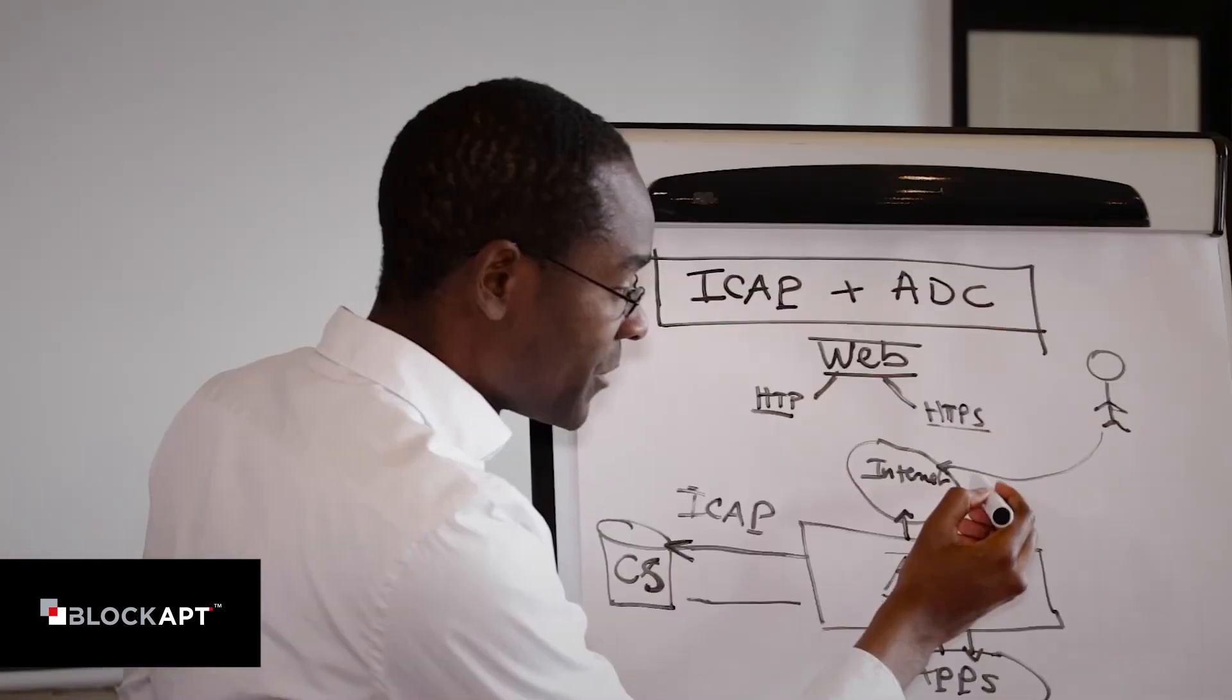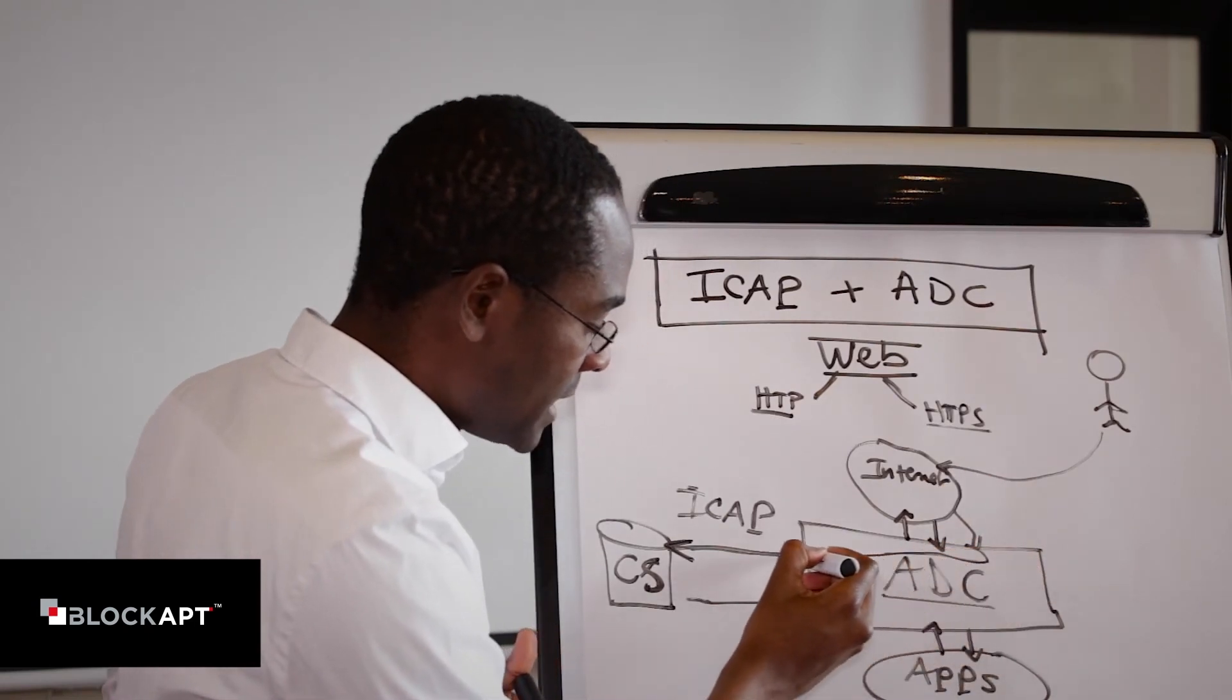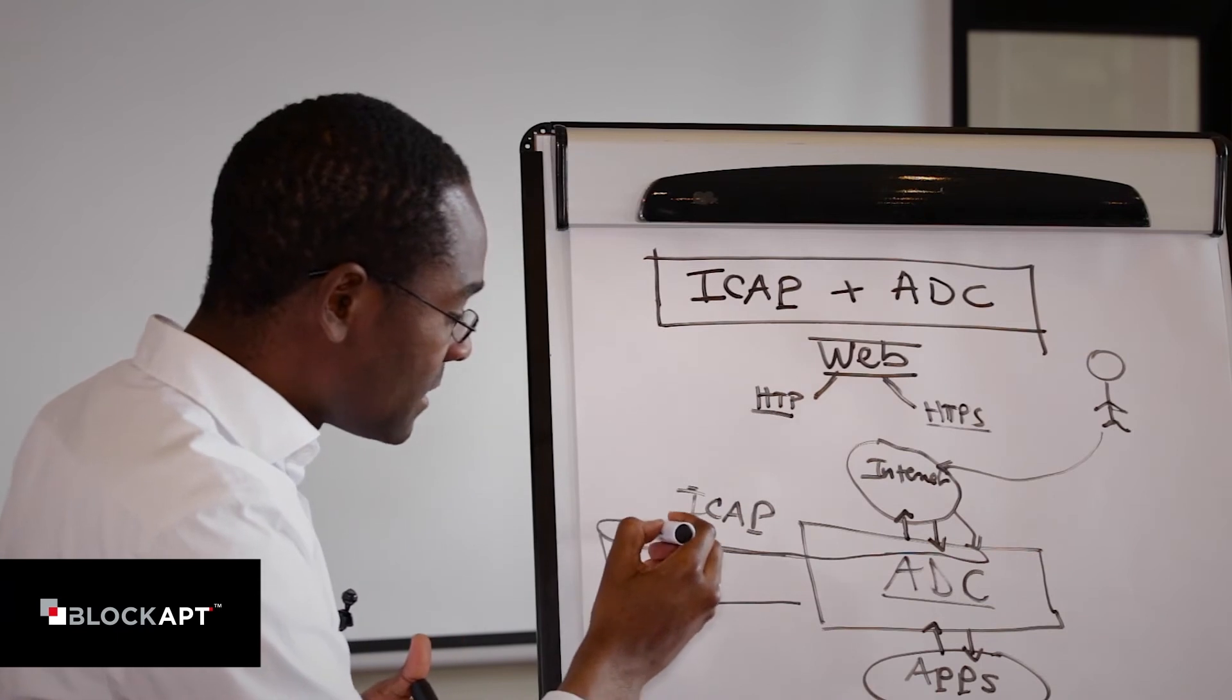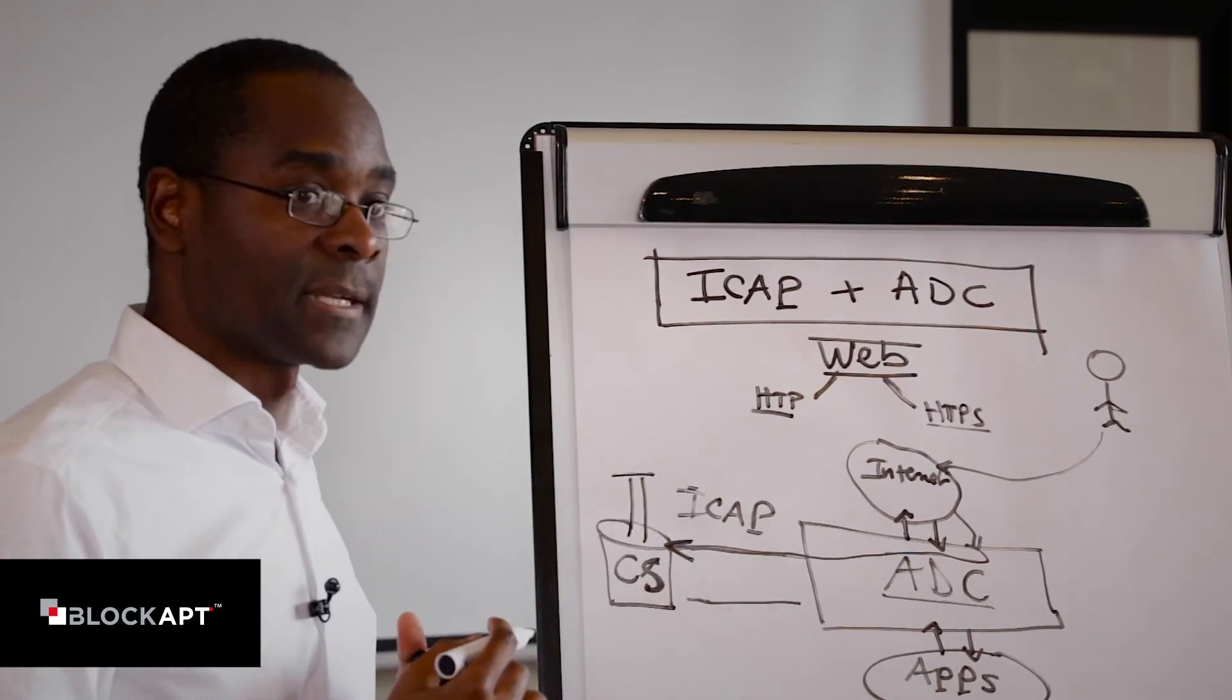So you can see from then on, we can have traffic going through the ADC, going through the ICAP system, and here the ICAP could then go ahead and decide what we're going to do to that traffic.